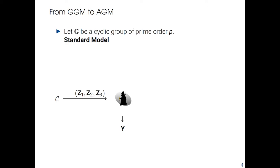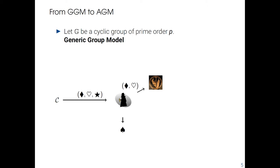In the generic group model, the group elements are not really known by the adversary. It just sees a purely random symbol which is completely independent of the real values. To compute new group elements, he needs to ask queries to an oracle, and this oracle will compute the group operation for the adversary and send him the new symbol corresponding to the sum of the group elements sent to the oracle. Because the oracle knows every group operation made by the adversary — since in reality she performs these group operations herself —